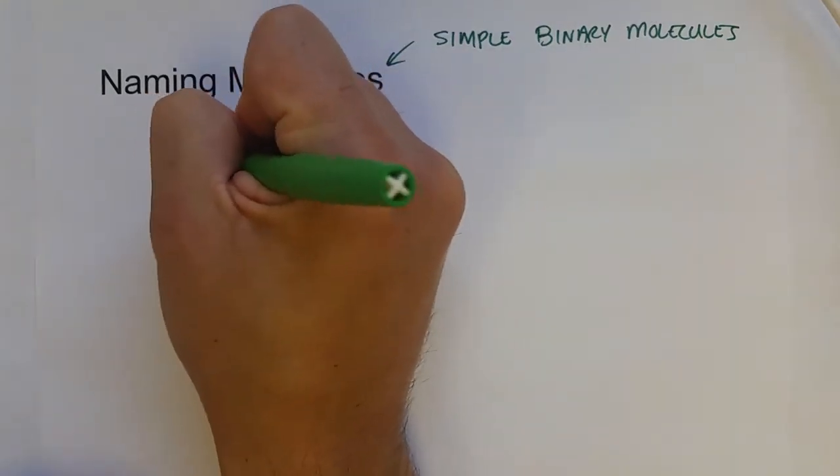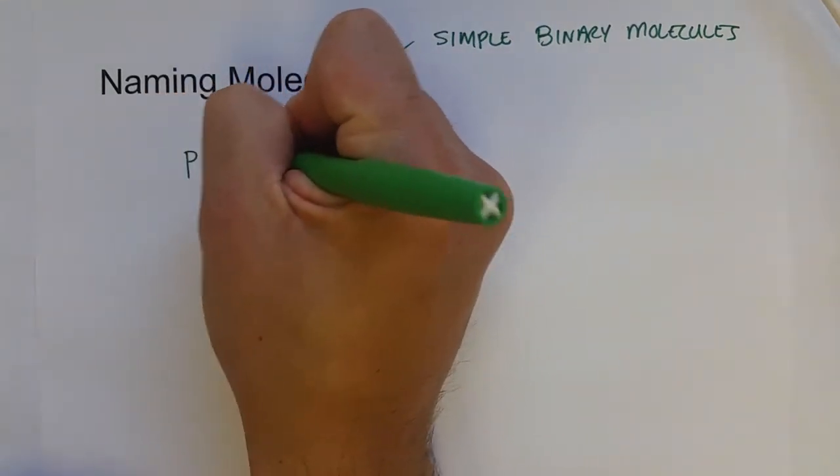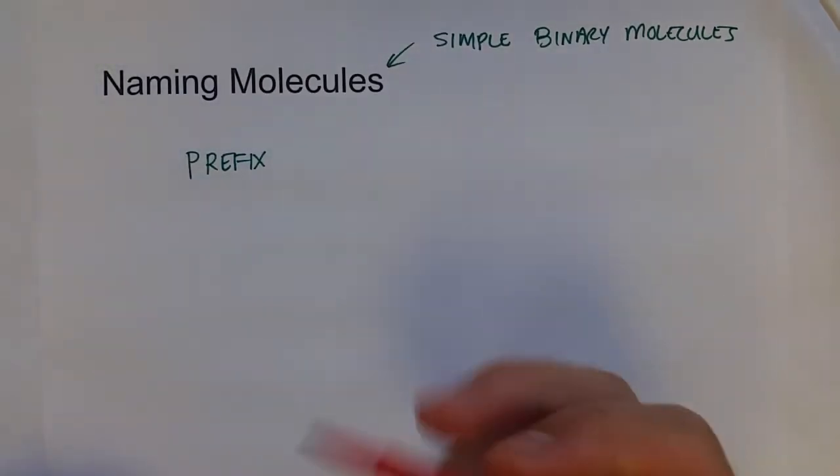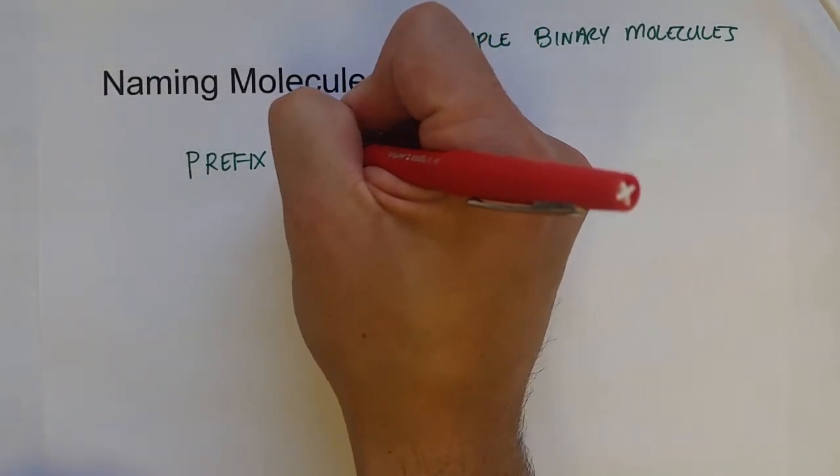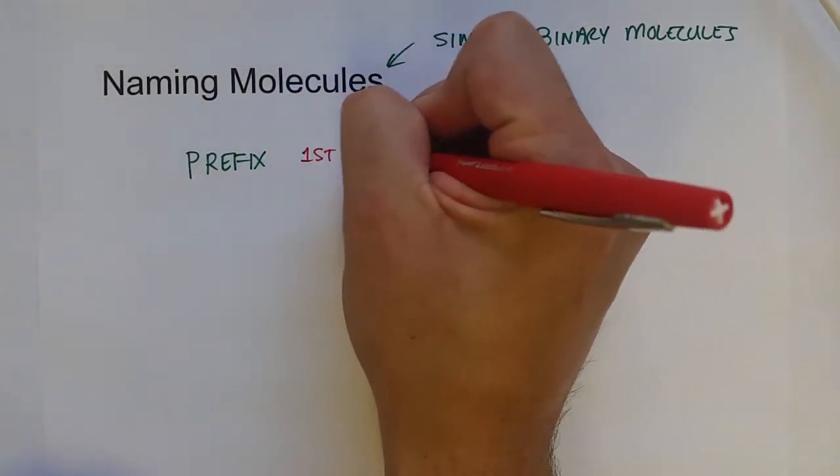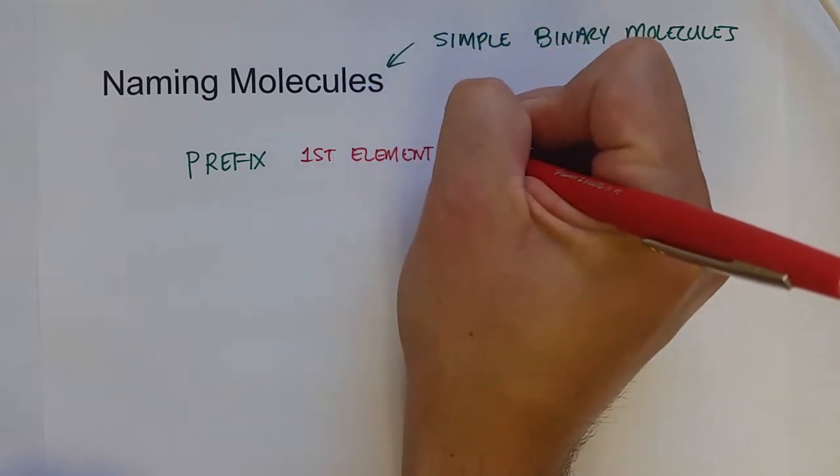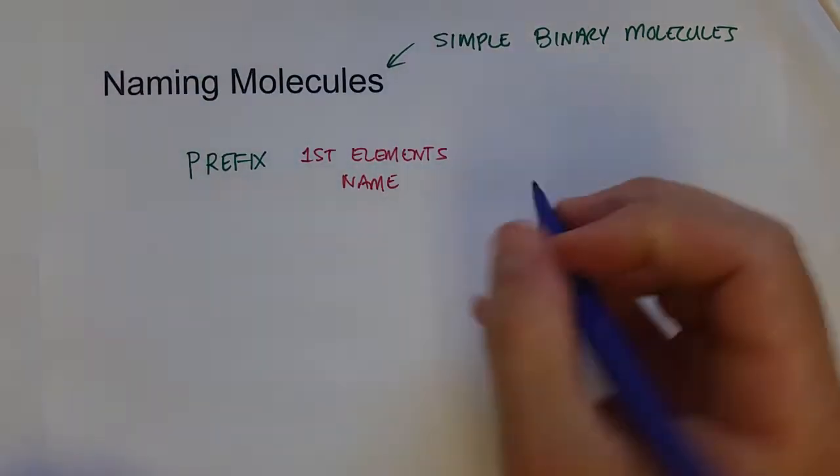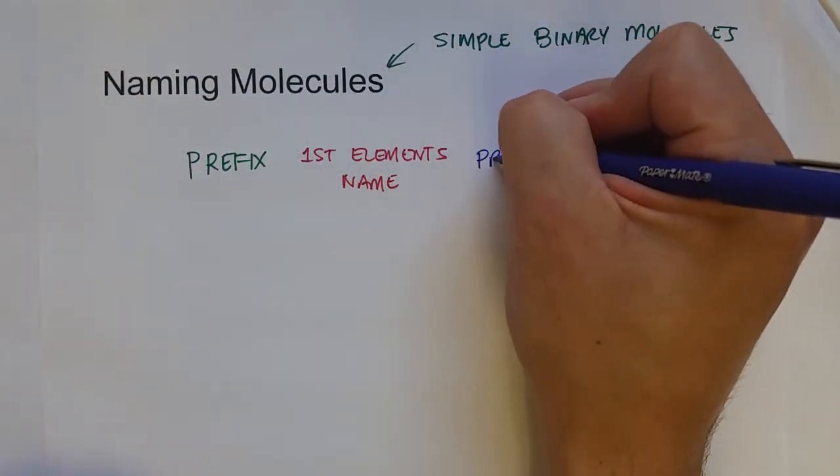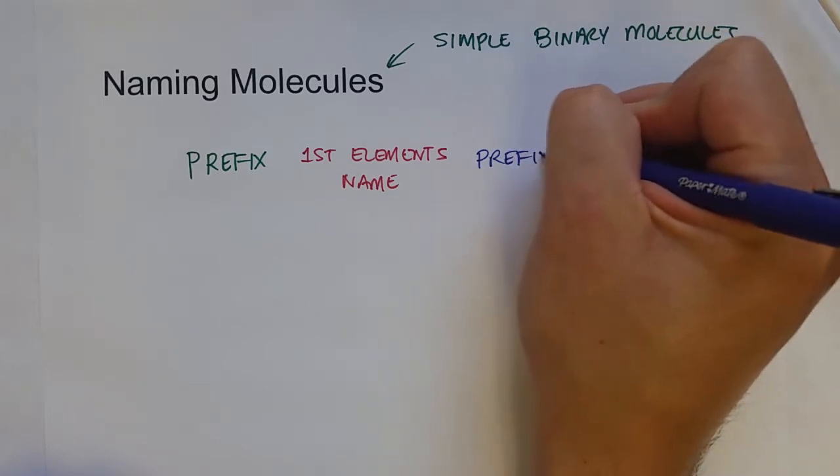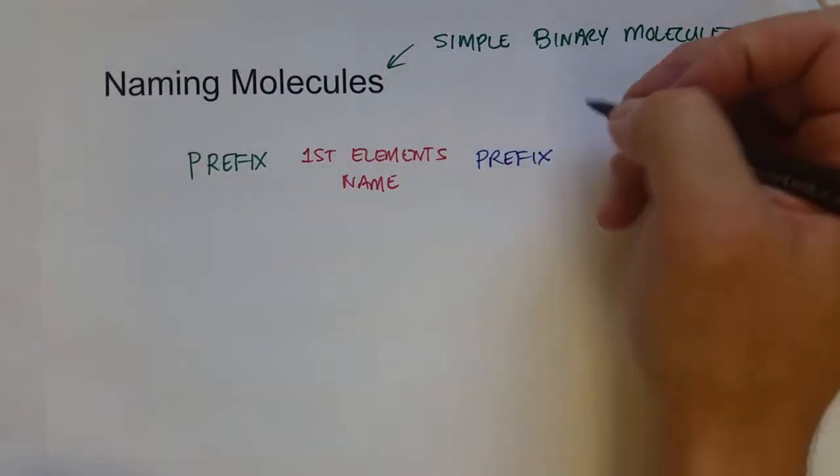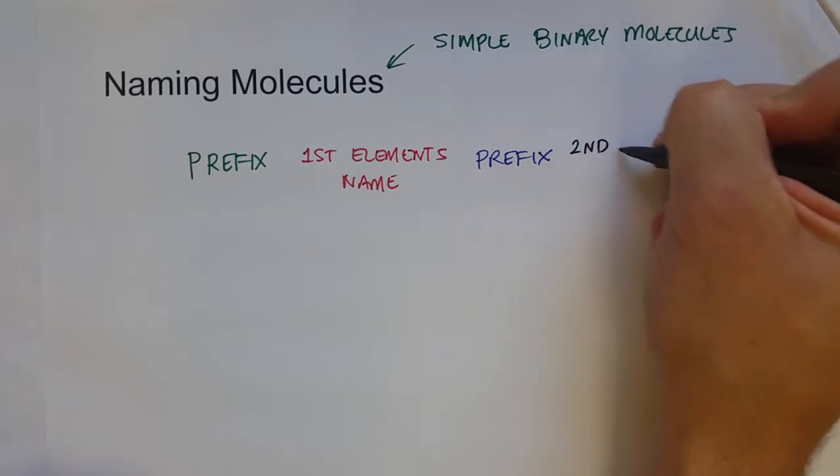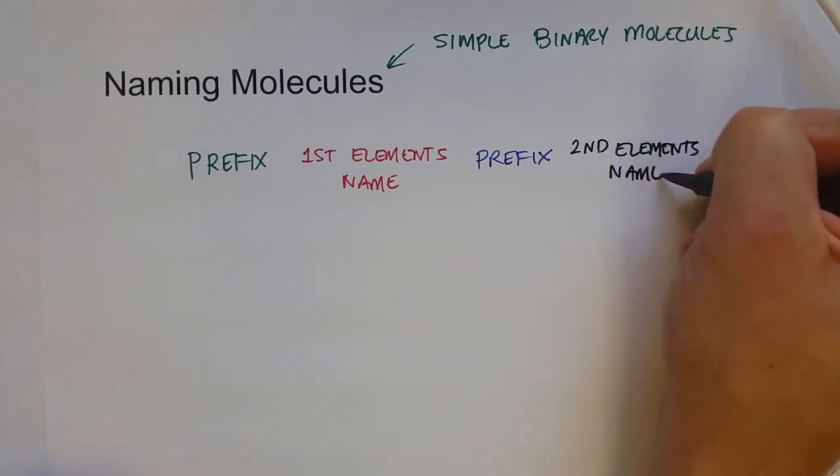We're going to use a prefix and then the first element's name, another prefix, and then the second element's name. But the second element's name we are going to change to -ide, just like the anions, even though they don't actually have a charge.